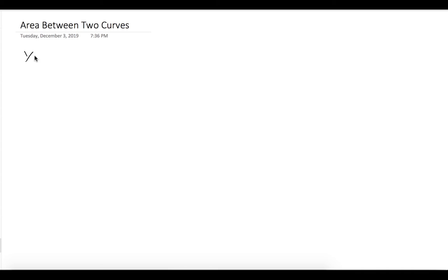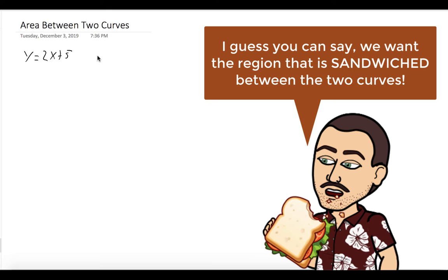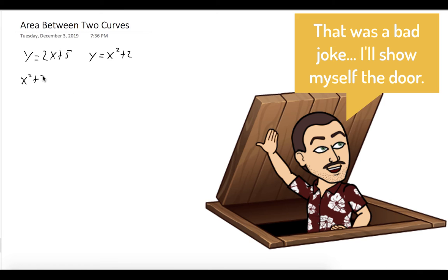So we want to find the area between the curves y equals 2x plus 5 and y equals x squared plus 2. So what we'll do is we'll find where they intersect. And to do that, you just basically set the functions equal to each other.